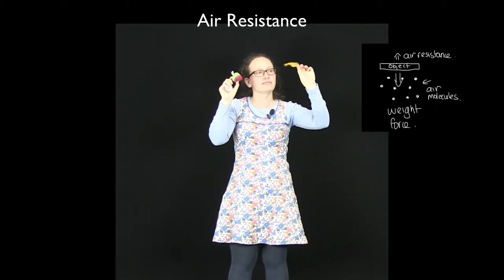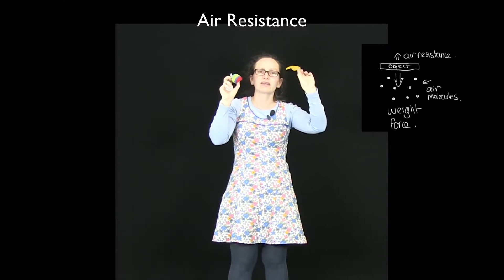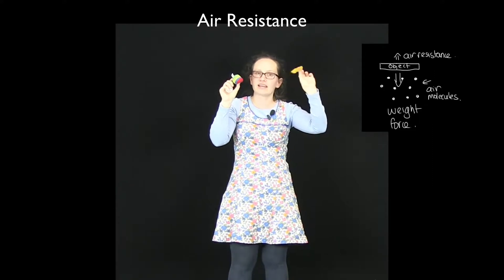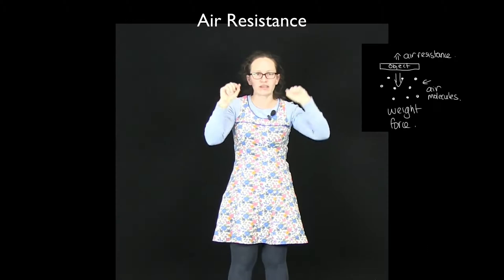So the gravitational force is smaller for the leaf, and so the air resistance is more significant for the leaf because one, it has more surface area and two, it has less gravitational force to overcome. So these do not hit the floor together.